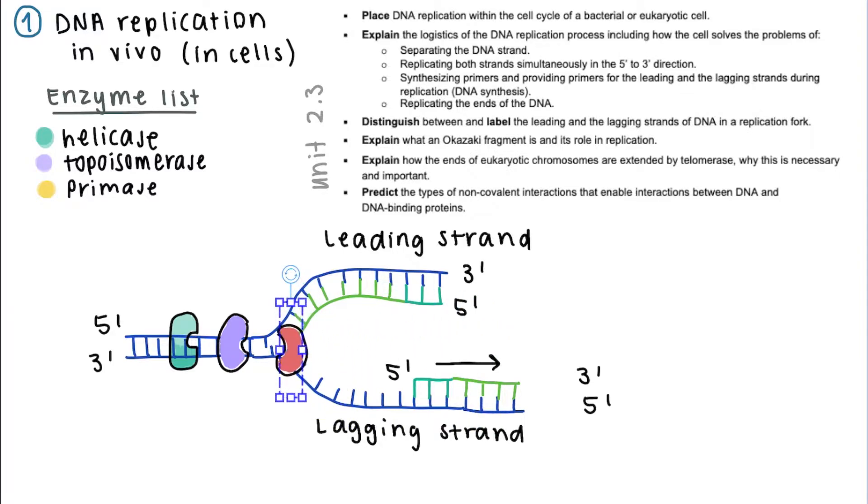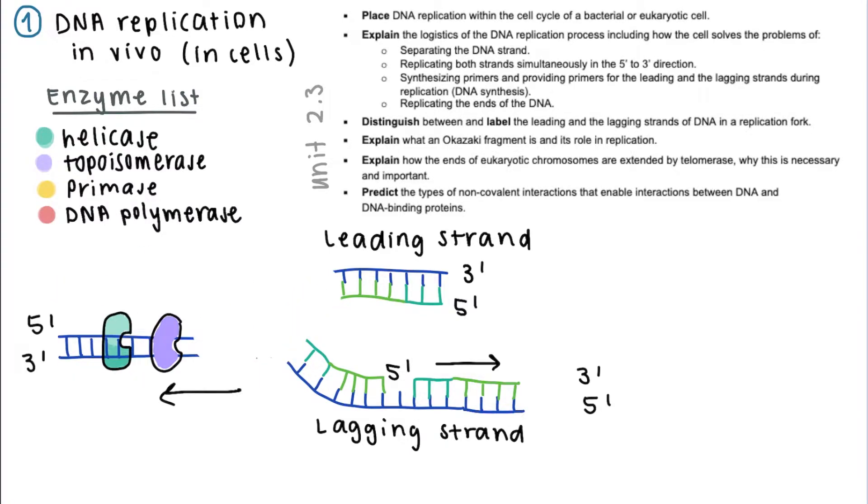Because of these differences between the top strand and the bottom strand in this diagram, come the terms leading strand and lagging strand. As the helicase keeps unwinding more DNA, the lagging strand will produce separate DNA fragments.